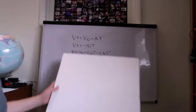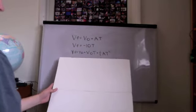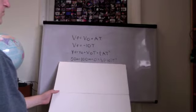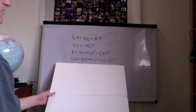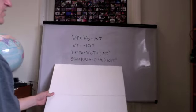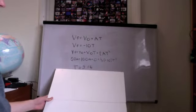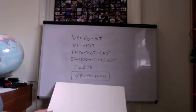We solve for time using the kinematic equation for distance. Our final position is 50 meters, initial position is 100 meters, initial velocity times time is zero, plus one-half times negative 10 times t squared. Solving that out with algebra, we get a time of 3.16 seconds. Plugging that back into our velocity equation, we get a final velocity of negative 31.62 meters per second.